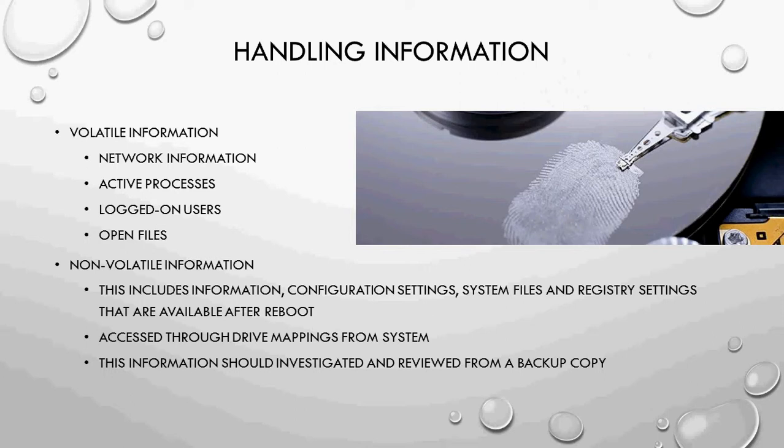There are two types of information: volatile and non-volatile. Open files, logged-on users, active processes, and network information are volatile. Non-volatile information includes files and processes that remain the same after the system is powered off. During investigation, if we are at the crime site, we first check whether the victim system is on or off. If it is on, we collect all volatile information. If it is switched off, we collect non-volatile information like system files, registry settings, and configuration settings after backup is done.